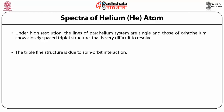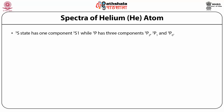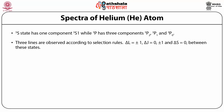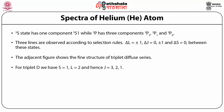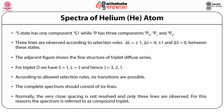The triplet fine structure is due to spin-orbit interaction. For the ³P to ³S transition, the 3S state has one component (3S1) while 3P has three components: 3P2, 3P1, and 3P0. Three lines are observed according to selection rules ΔL = ±1, ΔJ = 0, ±1, ΔS = 0. The figure shows the fine structure of the triplet diffuse series. For triplet D: S = 1, L = 2, J = 3, 2, 1. Six transitions are possible, giving six lines in the complete spectrum. Normally the very close spacing is not resolved and only three lines are observed, so the spectrum is referred to as a compound triplet.